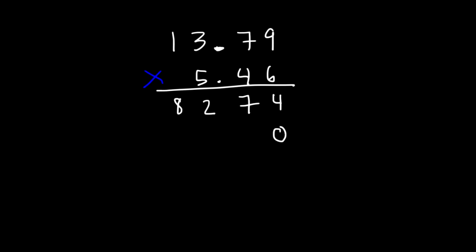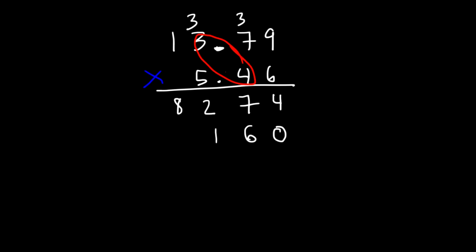Don't forget to add a 0. So, we're done with 6 — let's move on to 4. 4 times 9, that's 36 — carry over the 3. And then 4 times 7 is 28 plus 3, that's 31 — carry over the other 3. And then 3 times 4 is 12 plus 3, that's 15. So let's write 5 and carry over the 1. 1 times 4 is 4 plus 1, that's 5.